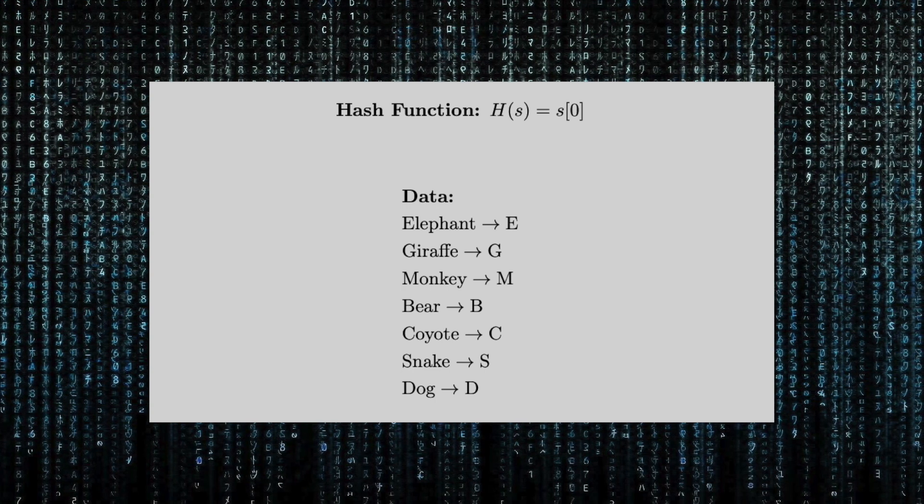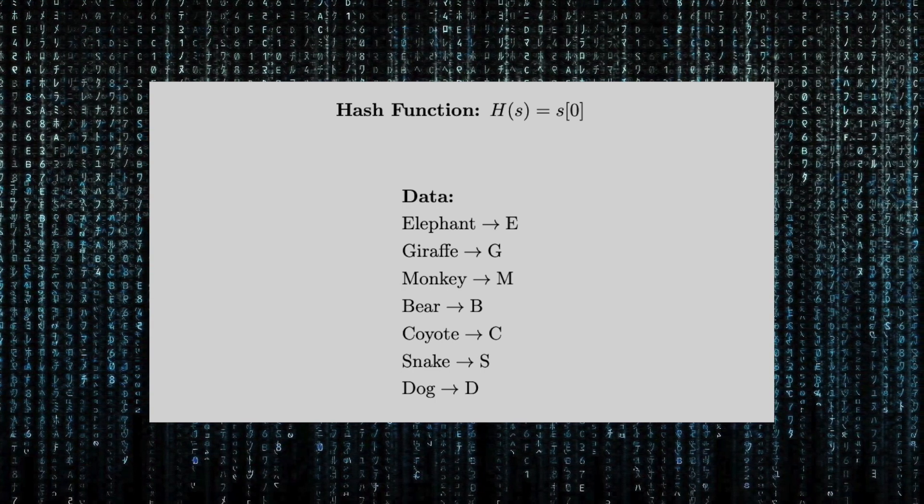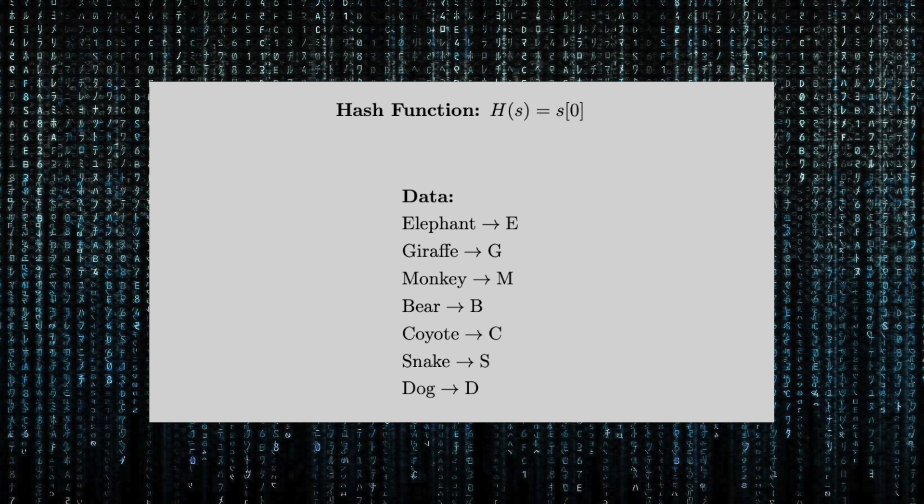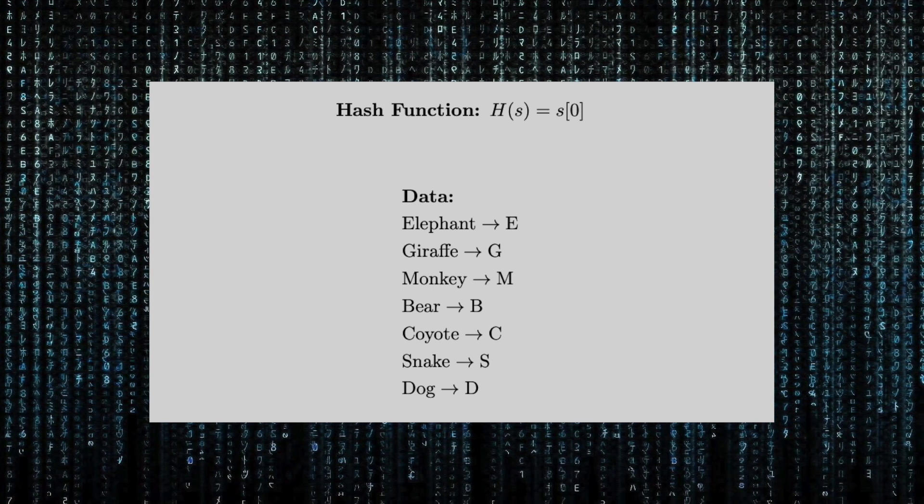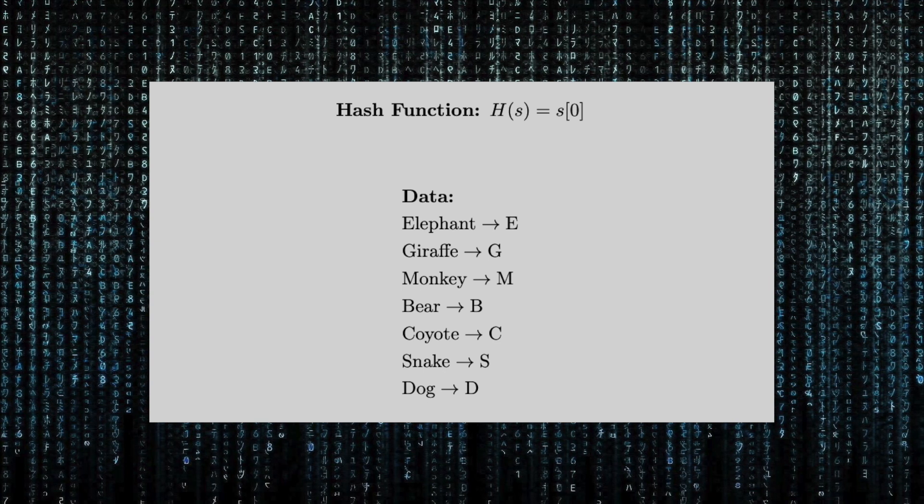Now we have a hash key for each data point. When we want to store this data on our computer, instead of storing each full name, we'll only store the hash key instead. Thus, we save memory on our computer.